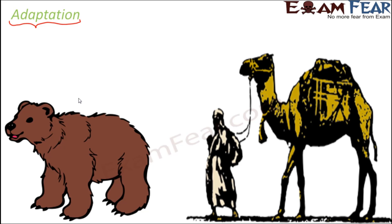Let us take the example of the polar bear. These bears have thick fur on their body — they have thick fur so that they can survive in extremely cold climates because fur provides warmth to the body. Now, if you take this polar bear and ask it to live in Rajasthan where the climate is very hot and dry, it will not be able to survive because the fur on its body is not like a sweater it can remove — with that fur its body will retain too much heat.